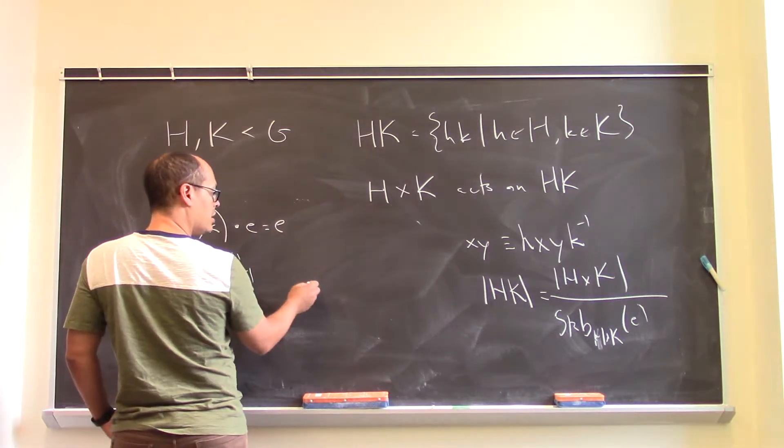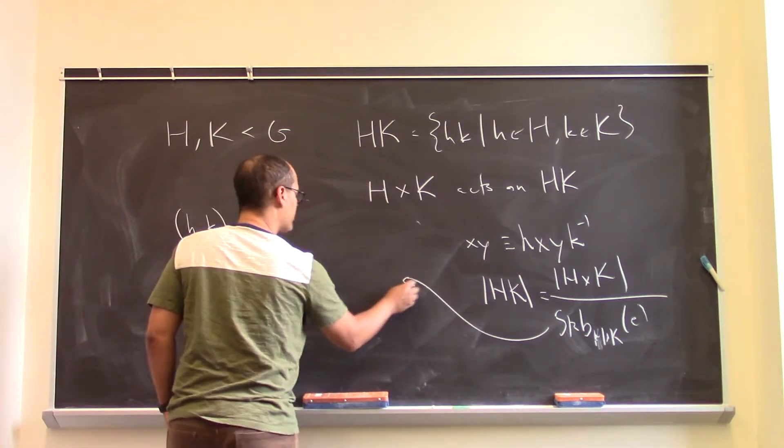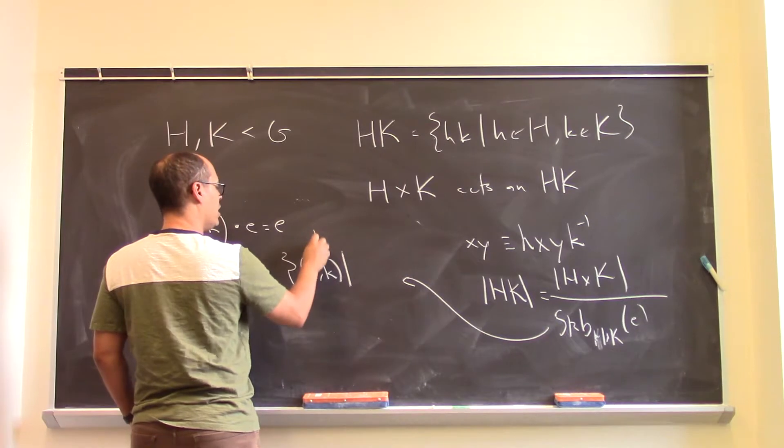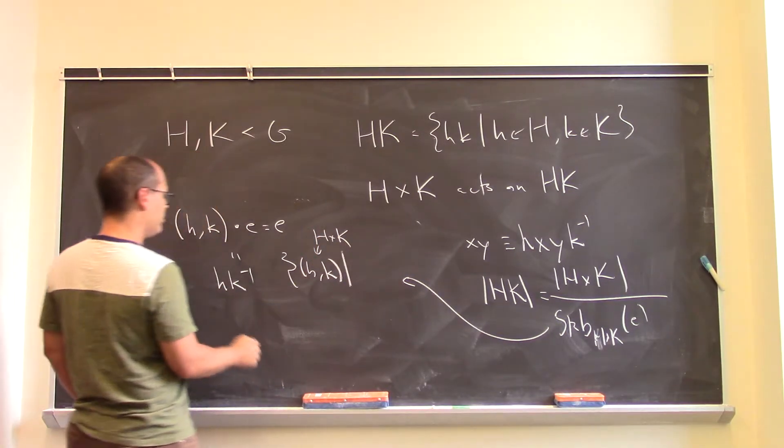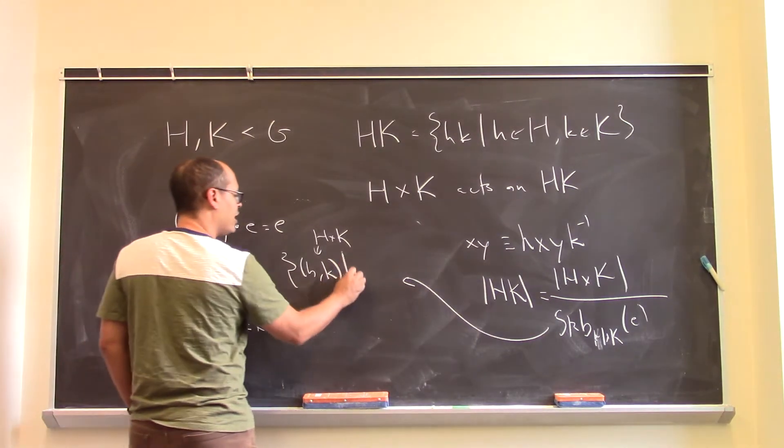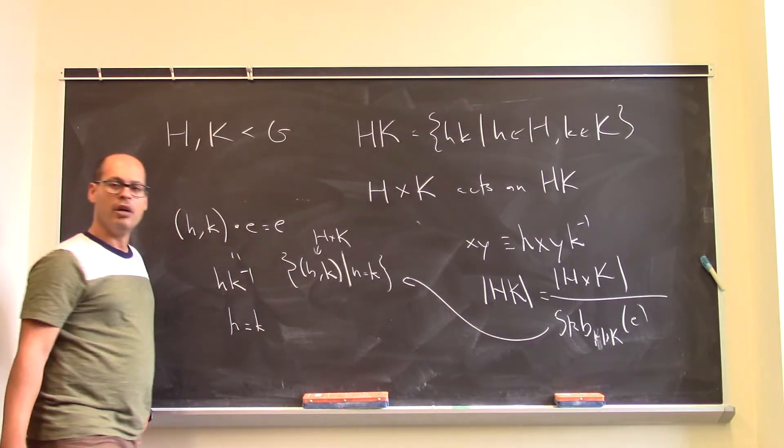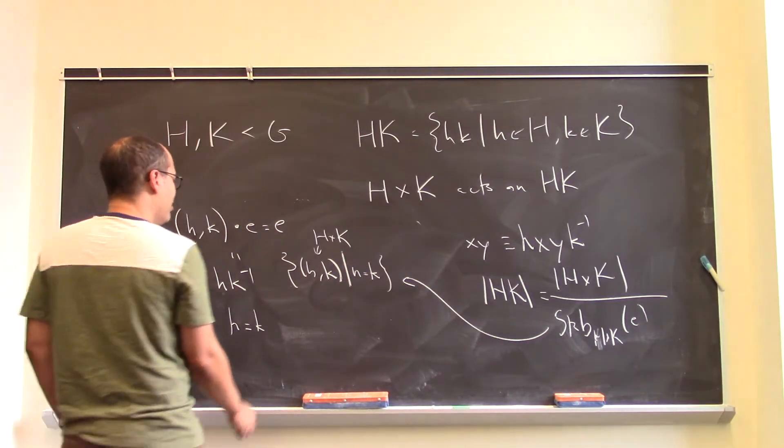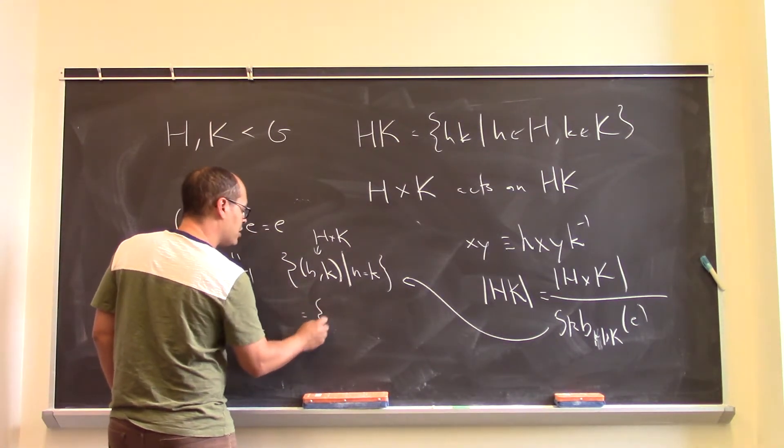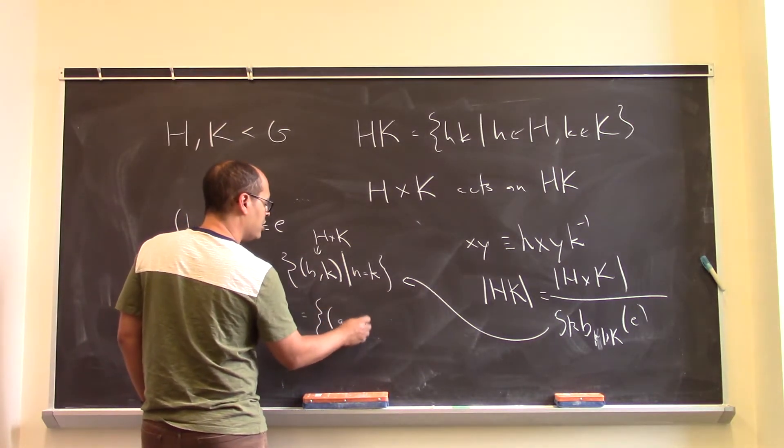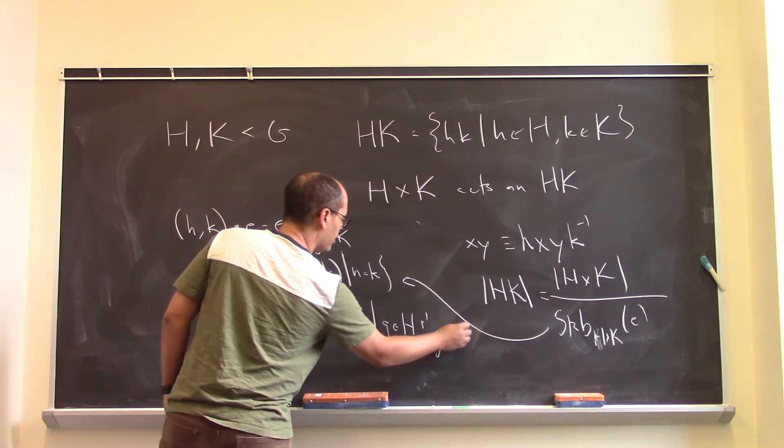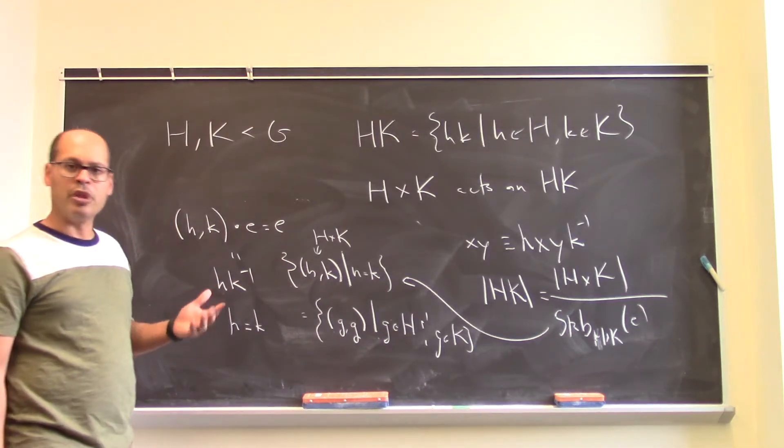Well, that is to say, the stabilizer can be identified with a set of pairs HK, such that, in H cross K, such that HK inverse is E. Well, HK inverse is E actually is just H equals K, right? Such that H equals K. Well, what are those pairs? Those, the number of such pairs are just the things in the intersection, right? This is the same as just the, call it G comma G, such that G is in H and G is in K. The number of such pairs is the number of things in the intersection.